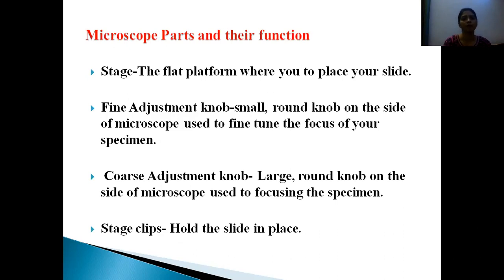The stage is the platform where you place your slide. The fine adjustment knob is a small knob on the side of the microscope used to fine-tune the focus of the specimen. The coarse adjustment knob is a large round knob on the side of the microscope used for focusing the specimen. The stage clip holds the slide in place.